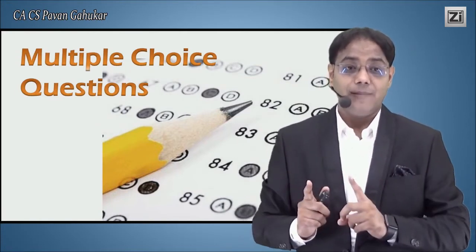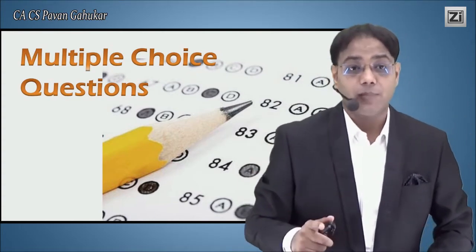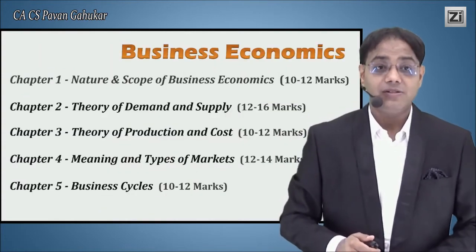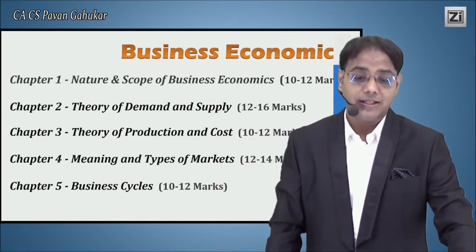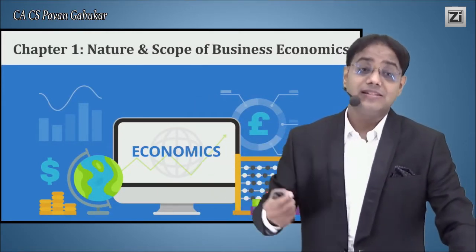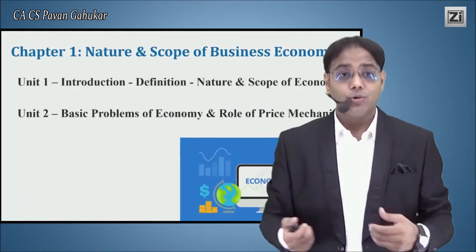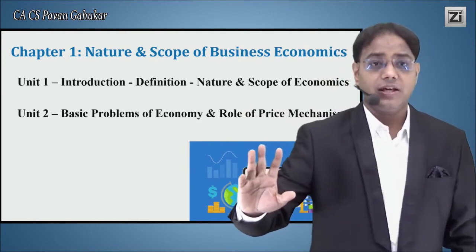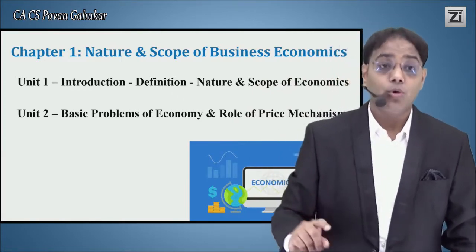Don't make the mistake of thinking MCQ exams are easy — that approach doesn't work. Now, let's discuss each chapter. Chapter 1, Nature and Scope of Business Economics, is a relatively easy chapter. There are two units. Unit 1 covers definitions — nature and scope of economics — and straightforward questions come in this unit. They won't increase the difficulty level significantly.